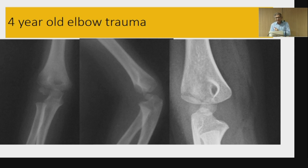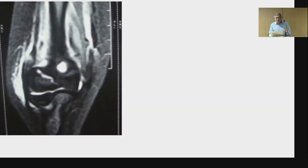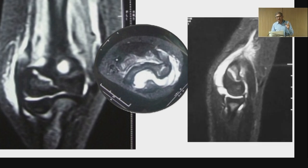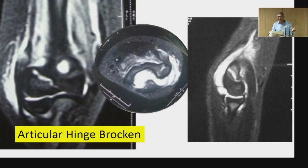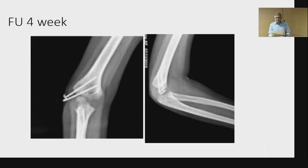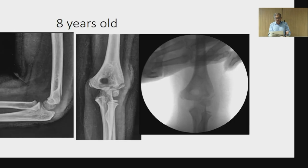This is a four-year-old child with AP, lateral, and internal oblique views. Again the fracture goes to the articular surface across the metaphysis, but the lateral gap is more than the medial gap — classified as indeterminate. MRI was advised; the parents agreed, and MRI showed that the fracture was going all the way to the articular surface. This patient would most likely have displaced at one week. Hence, we did not wait — we took the patient straight to the OT, passed two percutaneous divergent K-wires, and confirmed no displacement using an arthrogram. At four weeks, the fracture was confirmed healed, wires were removed, and everything went well.